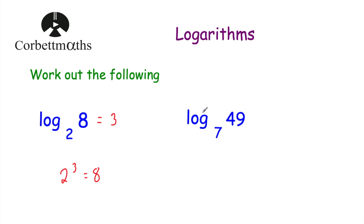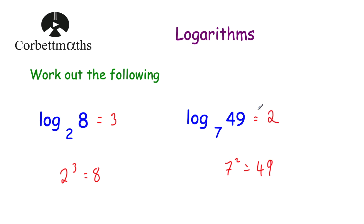Let's have a look at our next one. We've been asked to work out log to base 7 of 49. We just need to think: what power would you raise 7 by to get to 49? Well, 7 squared is equal to 49, so the power would be 2. The answer is 2 — log to base 7 of 49 is equal to 2.